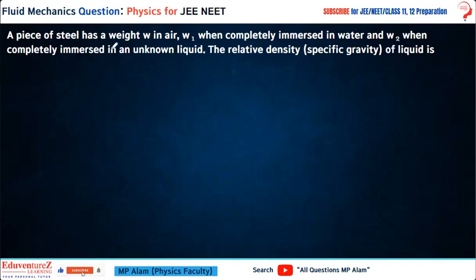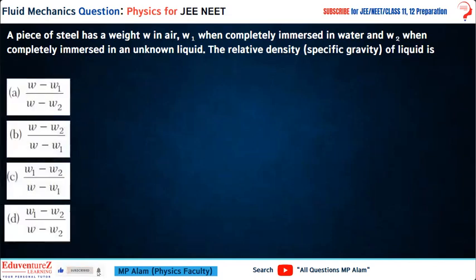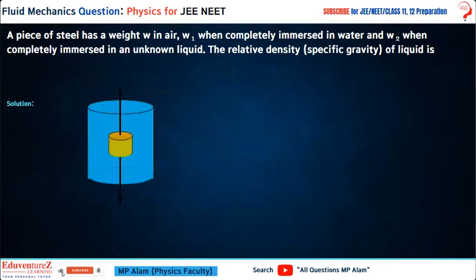A piece of steel has a weight w in air, w1 when completely immersed in water, and w2 when completely immersed in an unknown liquid. The relative density of the liquid is to be found from the given options. Let's see the solution first.